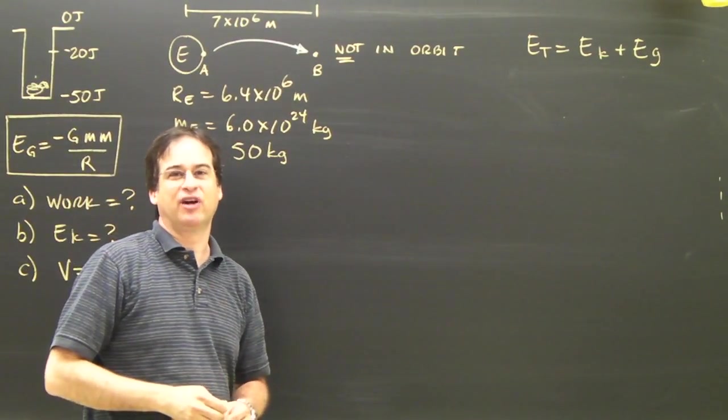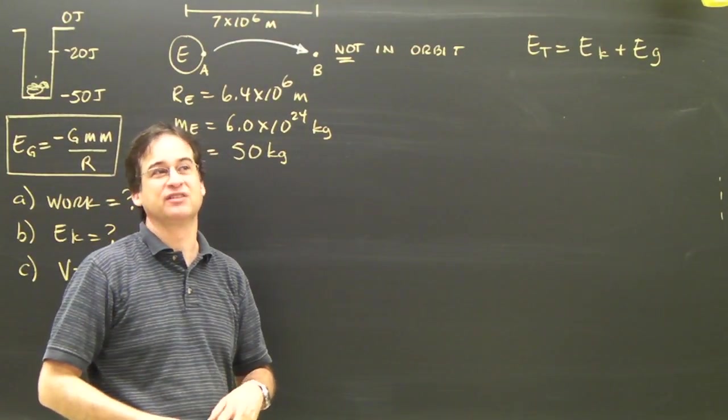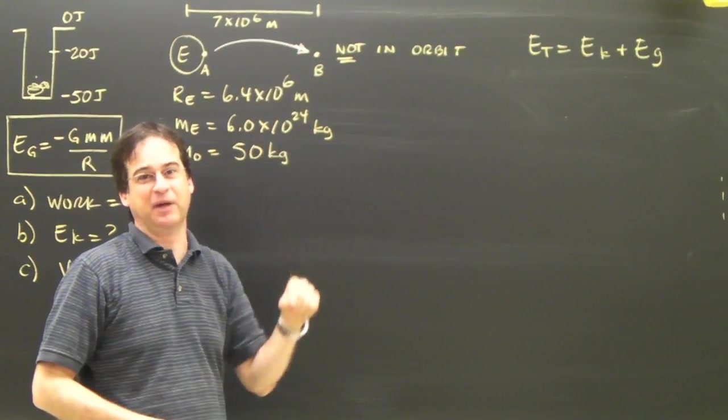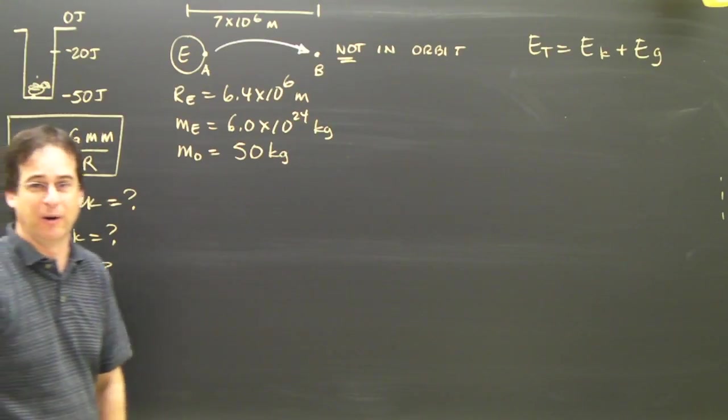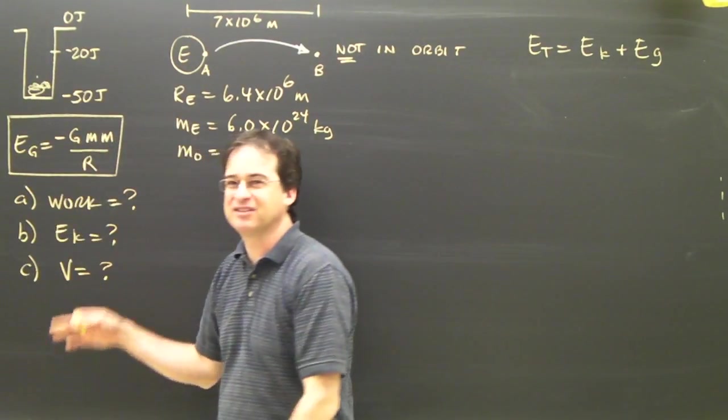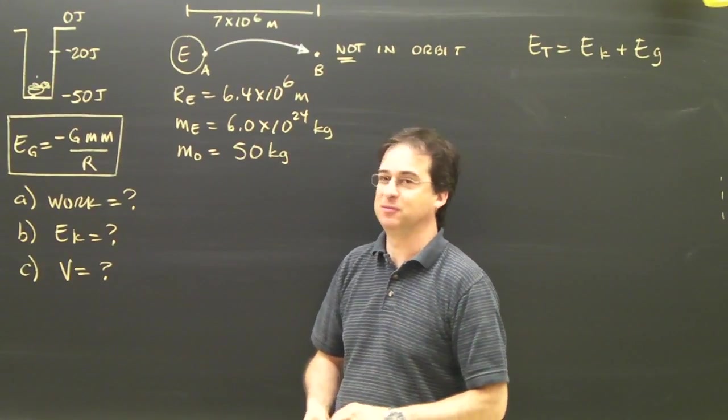So we have a very different way of calculating the energy and work for things that are moving up into orbit or into space. And the formula you may have seen is that the gravitational energy is negative GMM over R. There's a negative there, and it's going to make this a little bit confusing, so I'm going to try and keep it as simple as possible.